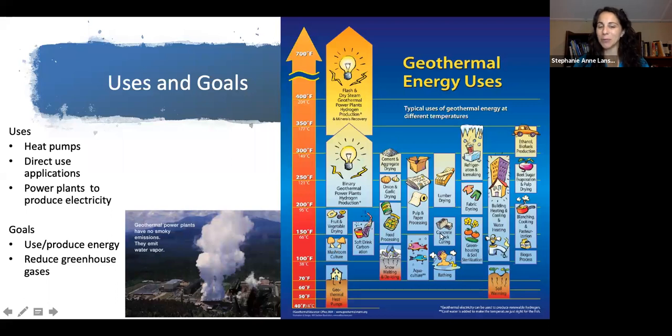At higher temperatures up to 150 degrees, we use it for drying mushrooms, food processing, curing concrete blocks, greenhouses, building water heating, and pasteurization and cooking. At very high temperatures, we use it for refrigeration, lumber, and finally for power plants, with binary plants being the cooler ones and flash and dry steam being the hottest.